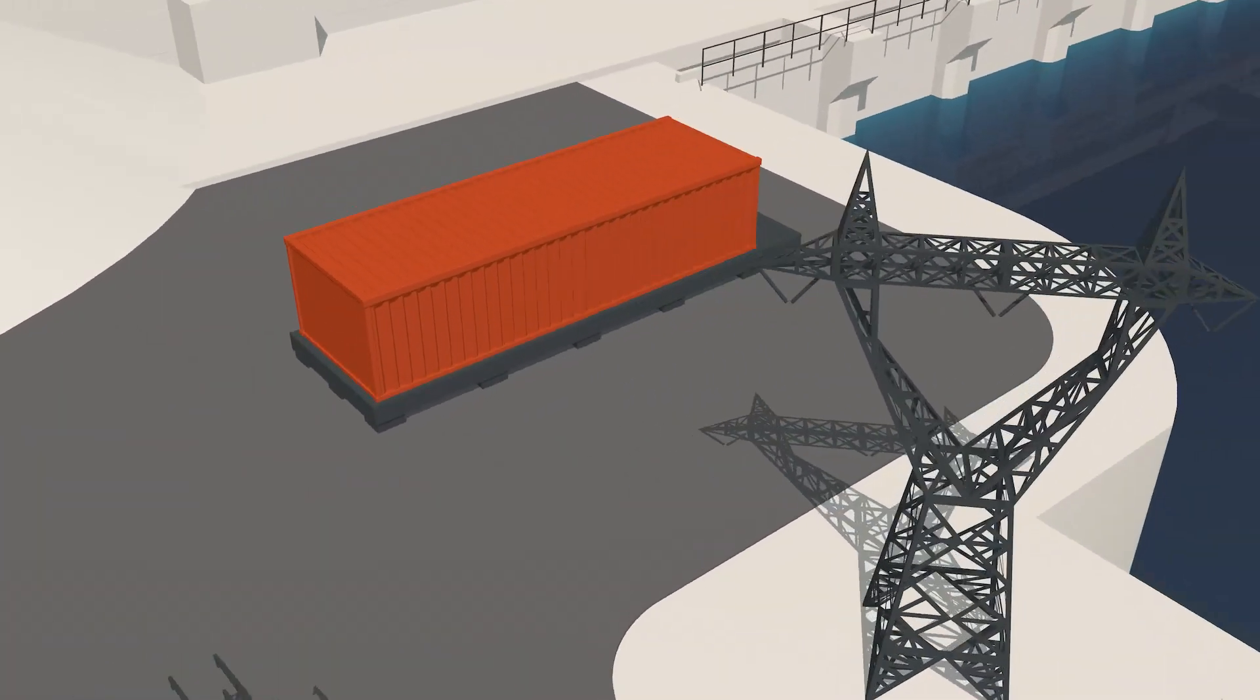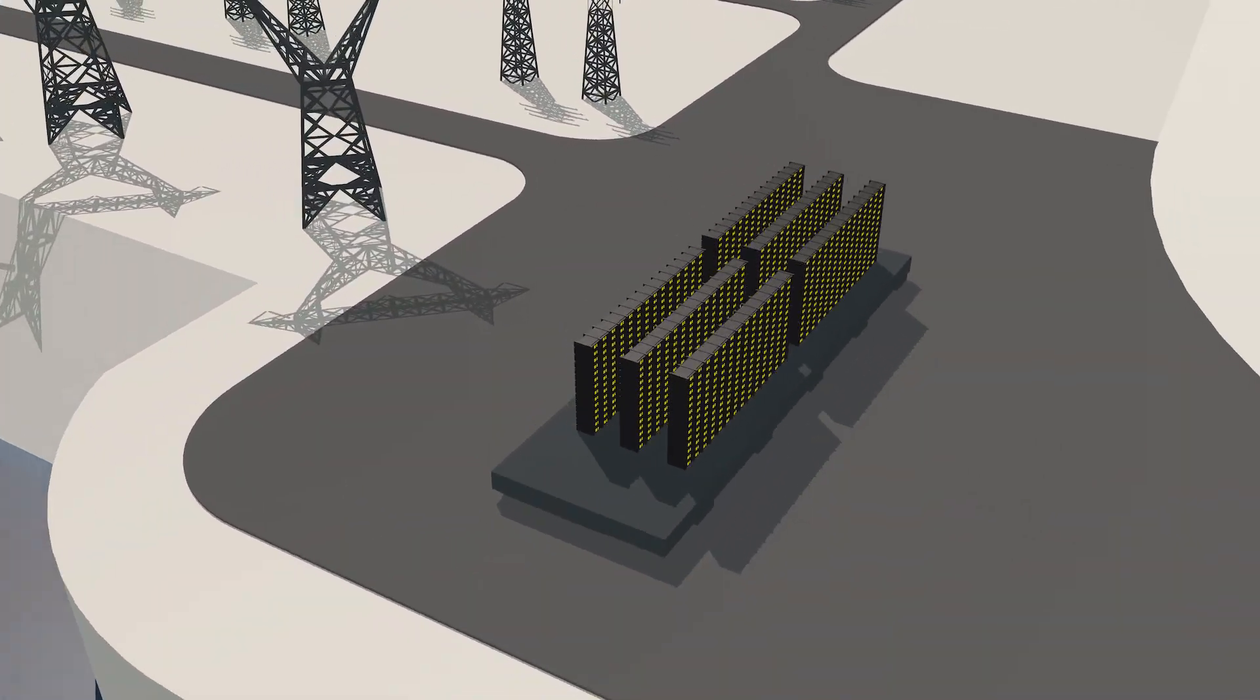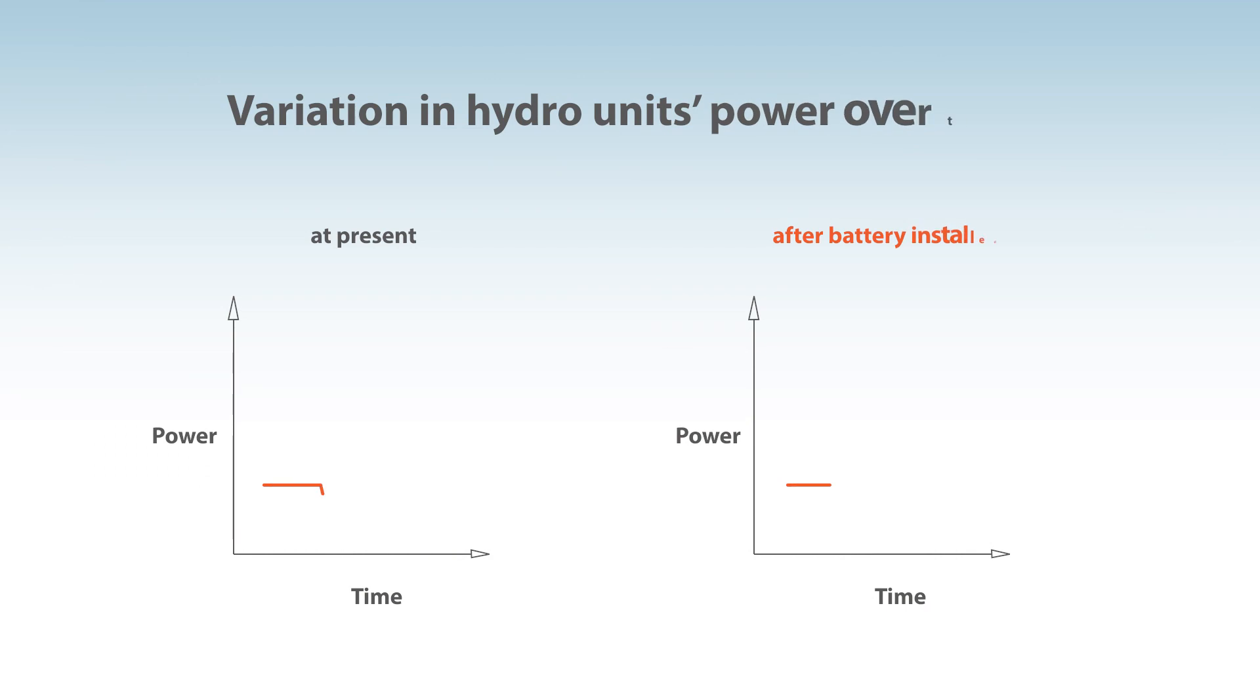Using a unique algorithm, the storage system will compensate asymmetries in hydro-unit operations, thus enabling the plant's operator to provide a high-quality FCR service.